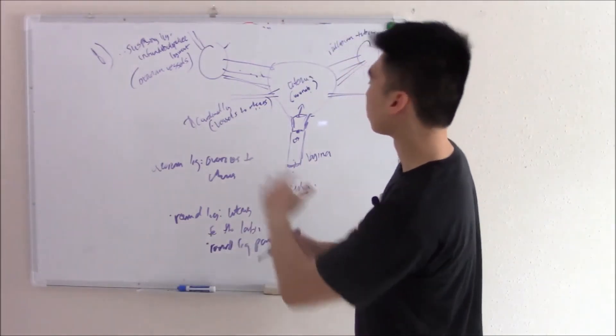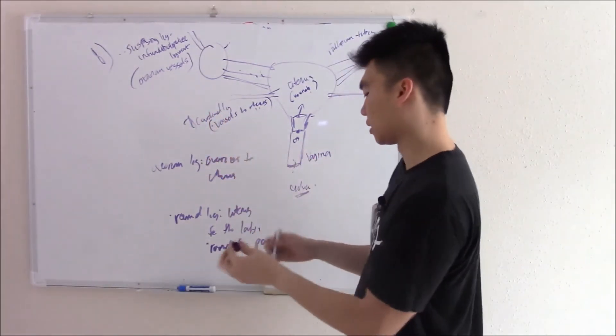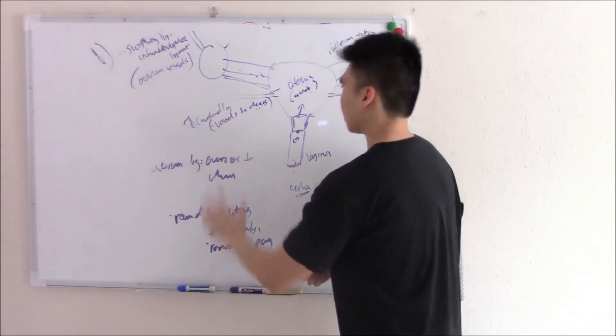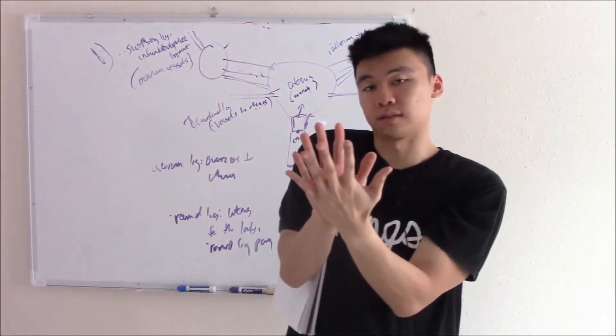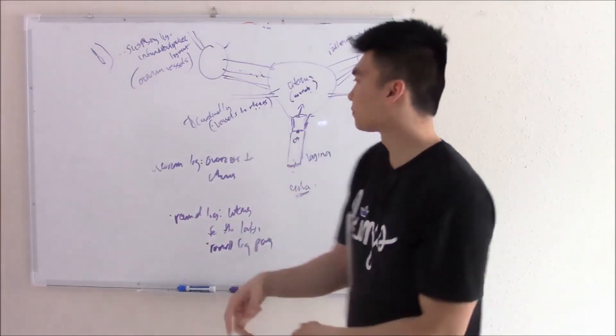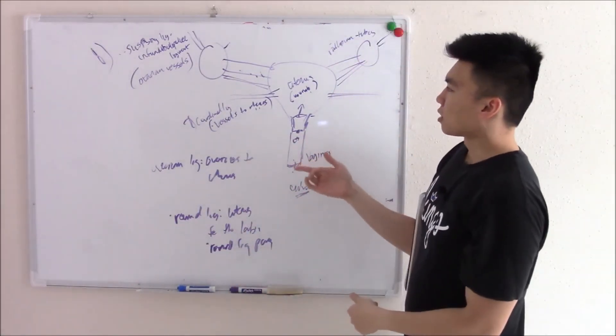Last but not least is your broad ligament. I can't really draw it. Your broad ligament is just a saran wrap that wraps these ligaments together, keeps them in place. That's your broad ligament, the saran wrap. Those are all your ligaments.